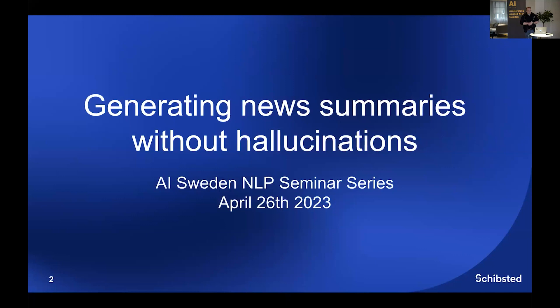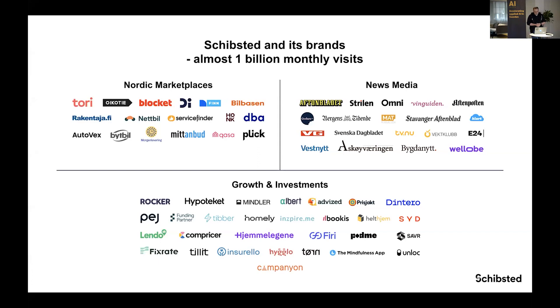Welcome everyone, and thanks a lot to AI Sweden for the invitation to join the seminar series. We're going to talk today about generating news summaries without hallucinations — our experience with large language models in generation of news summaries in the newsroom. To start, a brief overview of what Schibsted is: Schibsted started in 1839 as a news publisher, with Aftonbladet being the first news outlet.